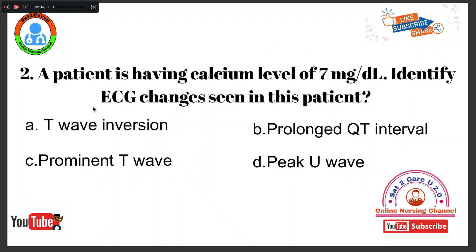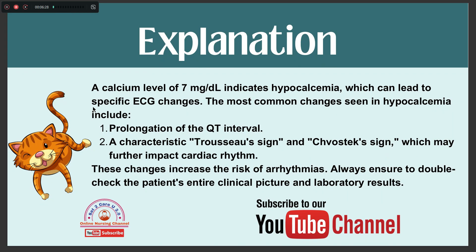A patient has a calcium level of 7 milligram per deciliter. Identify the ECG changes seen in this patient. The ECG changes will be Option B, prolonged QT interval. A calcium level of 7 mg/dL indicates hypocalcemia, which can lead to specific ECG changes. The most common change seen in hypocalcemia is prolongation of the QT interval.